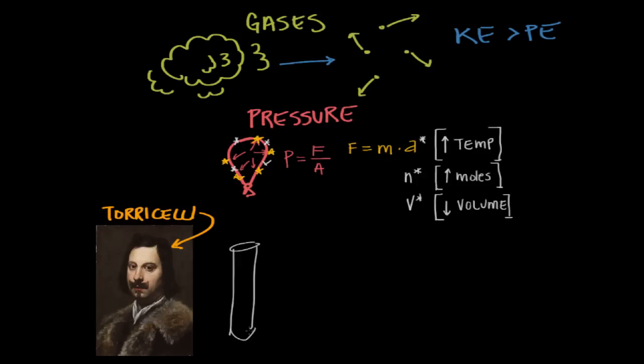So he took a glass tube and filled it up with mercury. And he quickly flipped it over and stuck the open end into an open dish of mercury. So he stuck the tube into an open dish of mercury, open end down.